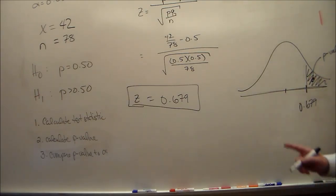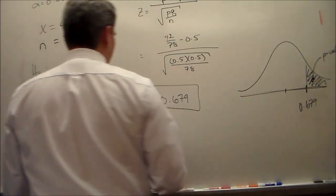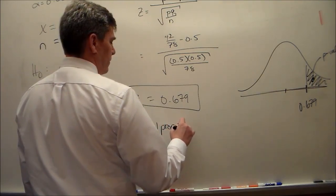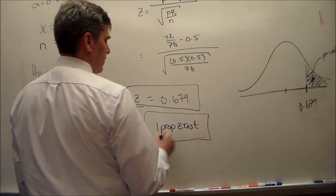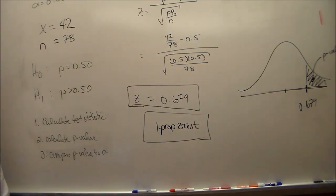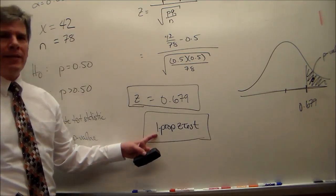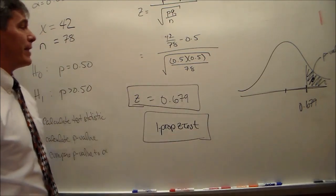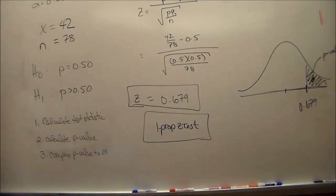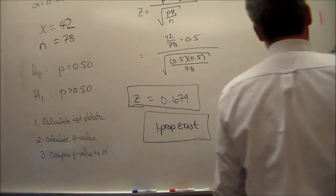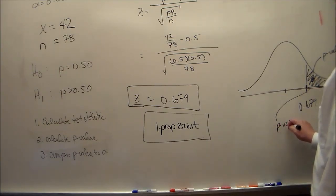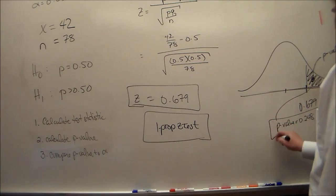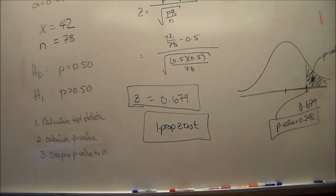How do we actually calculate that? We can use the methods from chapter 4, or we can use our calculator. I prefer to use the calculator. And we would use one-prop z-test — one because it's a one-sample test, prop because it's proportion, z because our test statistic has a z distribution, and test because we're testing a hypothesis. We find out that our p-value is 0.248. So this shaded area is 0.248. Since the p-value is greater than alpha, we fail to reject the null hypothesis.